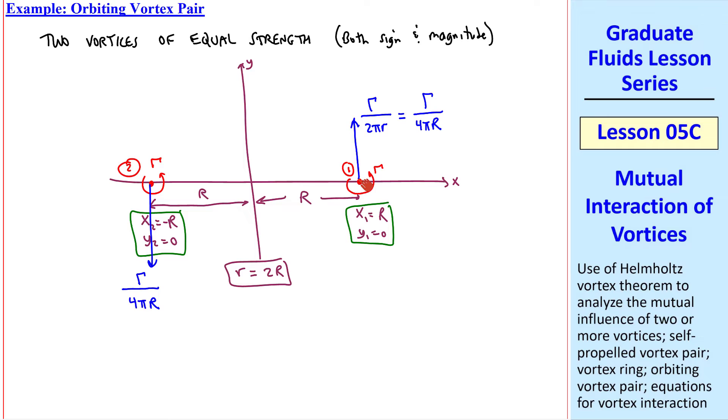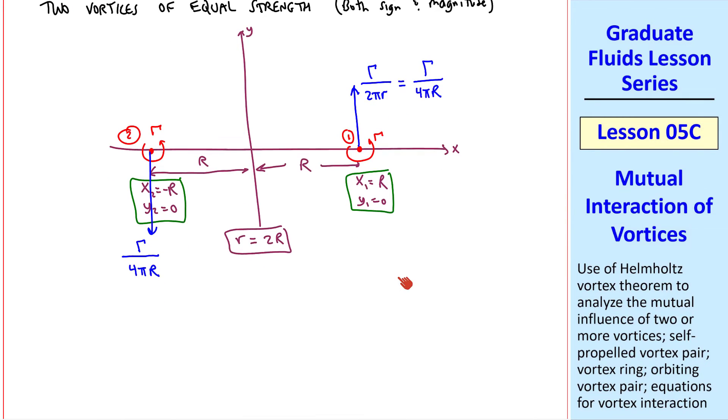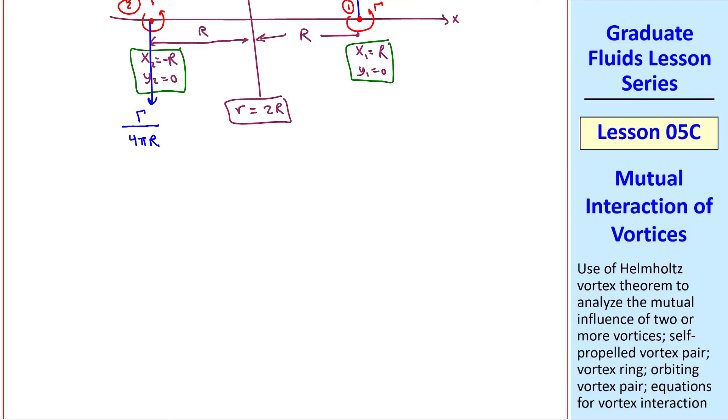At some very short time later, as these vortices move, they're no longer on the x-axis, and the induced velocities will be tilted a little bit like that. If you think about it, these vortices will induce themselves into a circular flow. In other words, they'll orbit at speed v, which is gamma over 4 pi r, and they orbit around the origin of the center between the two vortices. So this is an orbiting vortex pair.